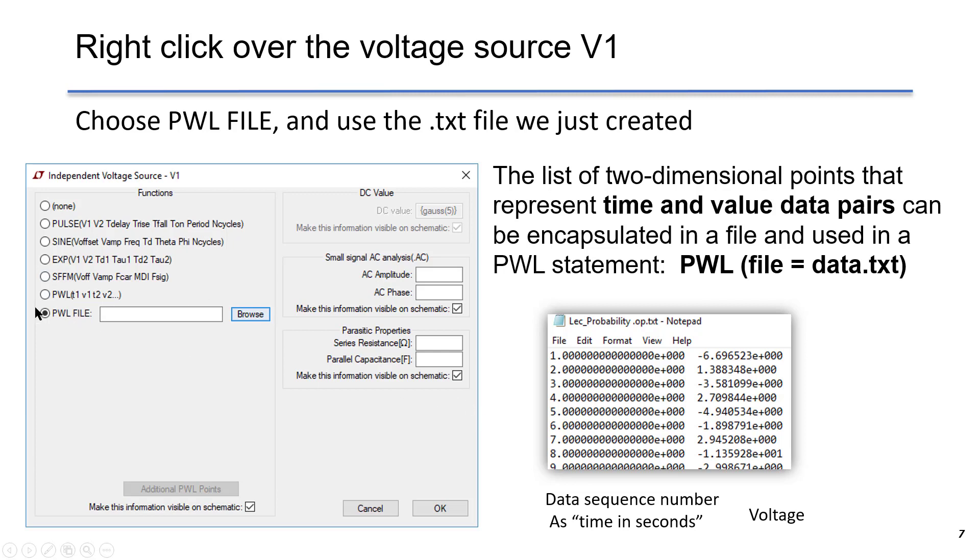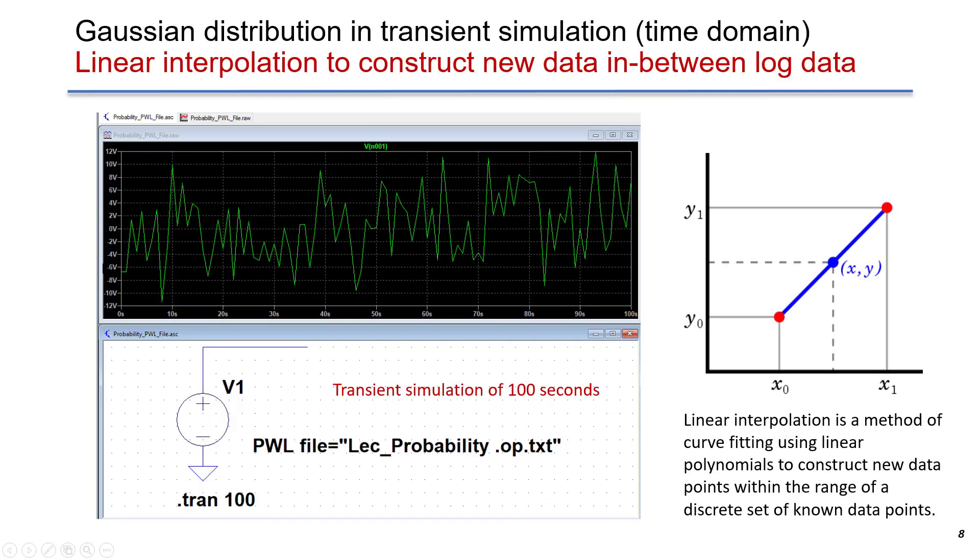So now we want to repeat the same data in time domain. Here is a transient simulation. We output the Gaussian distribution data in transient simulation from 0 to 100 seconds represents the data we have. One thing we want to emphasize is that linear interpolation is used to estimate the new data between two known data points. This simulation is 100 seconds, because for the first column, we have data from 1 second to 100 seconds, which was created by the time sequence from 1 to 100.